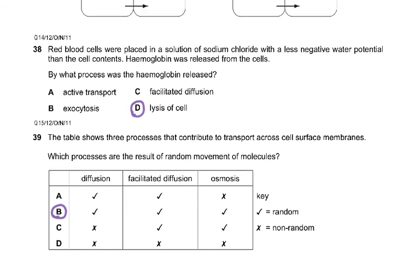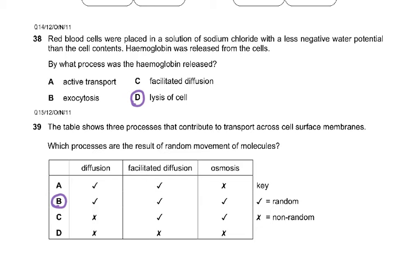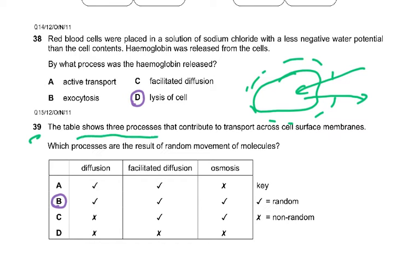Then question number 38. Red blood cells are placed in a solution of sodium chloride with a less negative water potential than the cell contents. Hemoglobin was released from the cells. By what process was the hemoglobin released? Of course, naturally, if it's a less negative, this is the cell membrane. Water enters and the cell is going to swell up and it's going to burst. So the hemoglobin is going to be released because the cell burst. And that bursting and that puttofying is called lysis. I know there's no word English puttofying. I just made it all up.